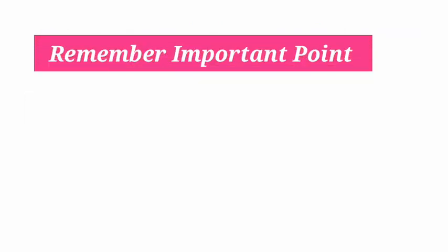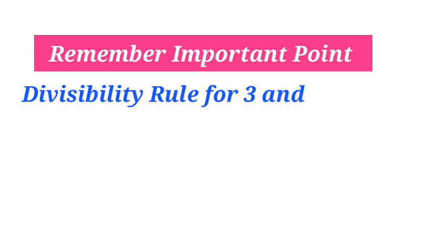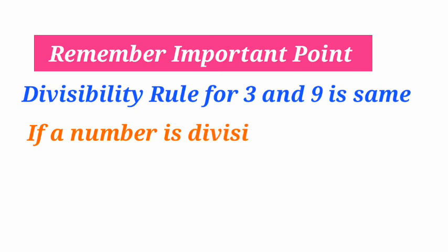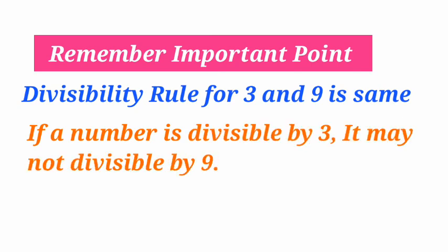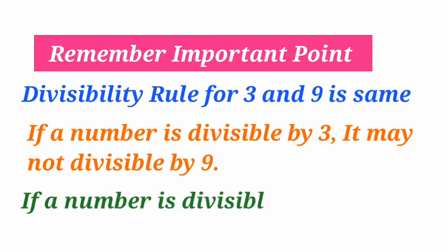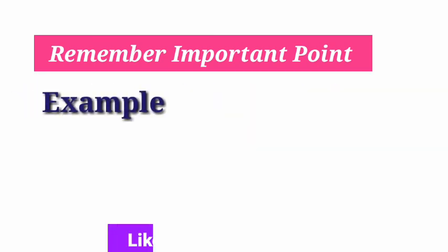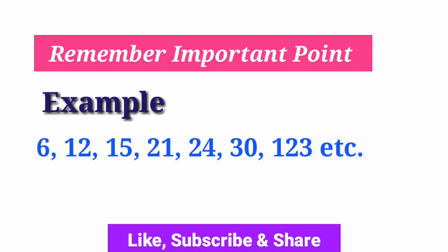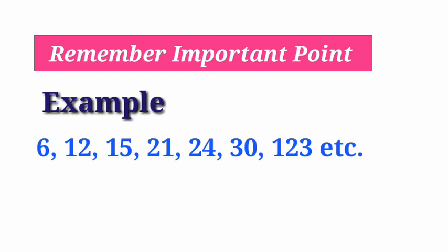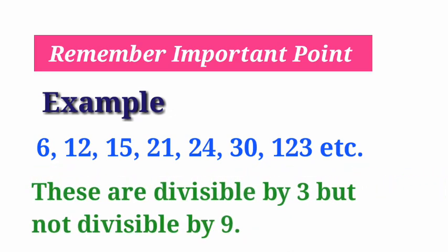Here we remember one important point: the divisibility rule for 3 and 9 is similar. If a number is divisible by 3, it may not be divisible by 9. But if a number is divisible by 9, it is divisible by 3 also. For example, 6, 12, 15, 21, 24, 30, 123, etc. — these are divisible by 3 but not by 9.